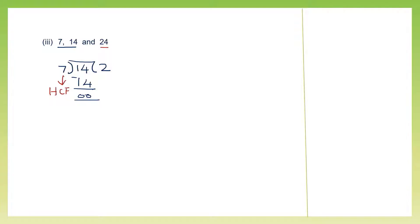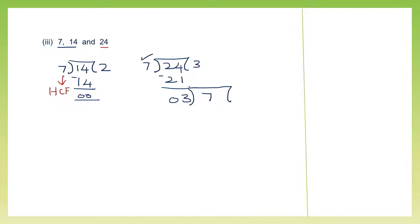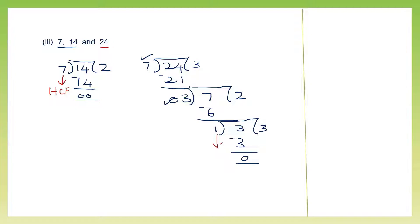Now we have a third number, 24. We're going to use 7 to divide 24 — 24 will be inside and 7 will be outside. 7 ones are 7, 7 twos are 14, 7 threes are 21. Minus: 4 minus 1 is 3. Continuing, we put 7 inside: 3 twos are 6, minus — remainder 1. Again continuing, divisor becomes 1: 1 threes are 3, minus — remainder 0. The last divisor that gave remainder 0 is our HCF. So the HCF of 7, 14 and 24 is 1.